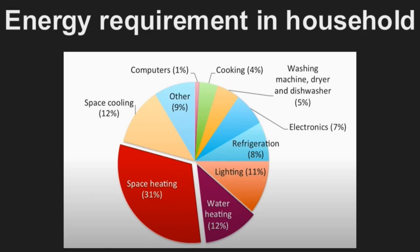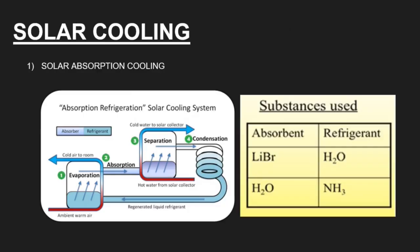12 percent of the energy required in the household is for water heating and then 12 percent again is required for space cooling. Approximately 50 percent of the energy goes into space cooling, space heating, and water heating purposes.